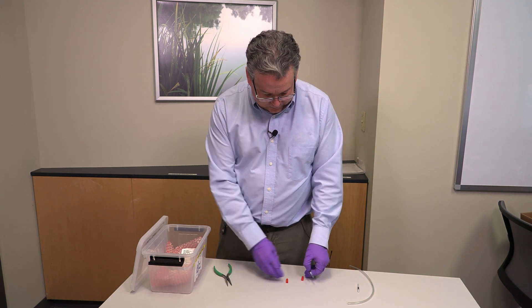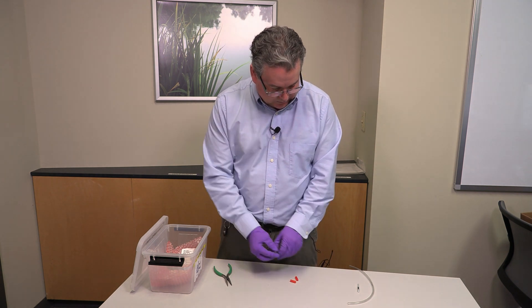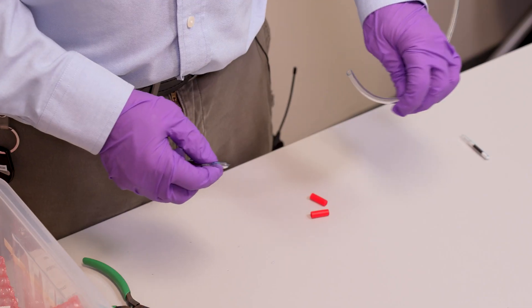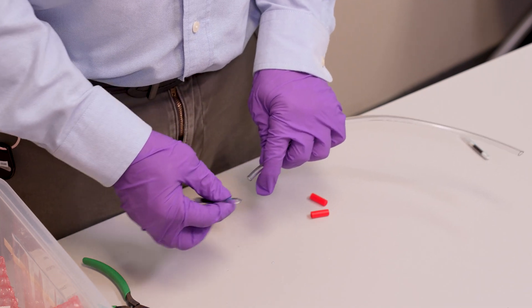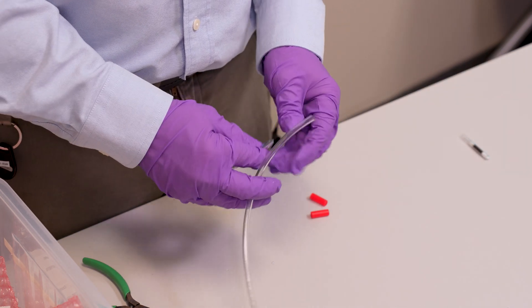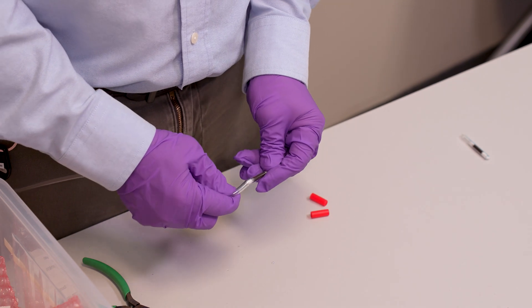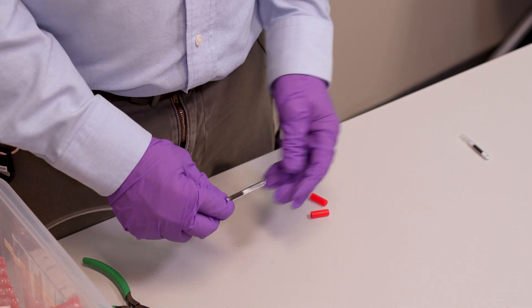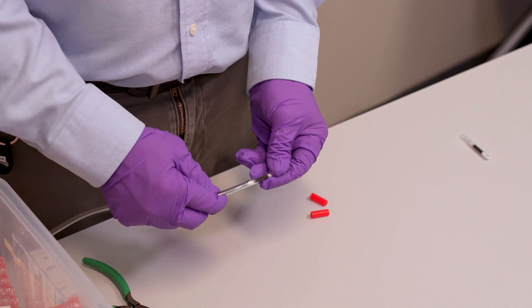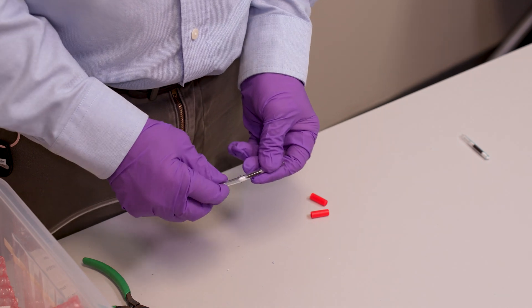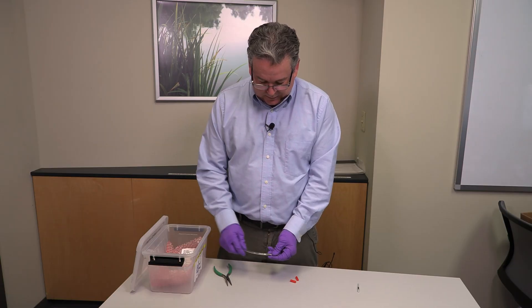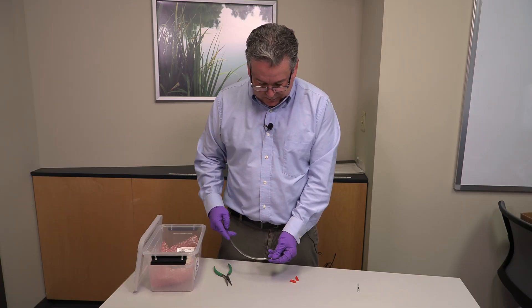At this point your tube is ready to hook up to your sampling pump. Your sampling pump will have a piece of tubing coming off the pump. You want to put that tubing so that the flow is coming through the pump, through the tube, in the correct direction. In this tube the arrow is pointing that way. The pump is going to pull air through the tube, not push it.